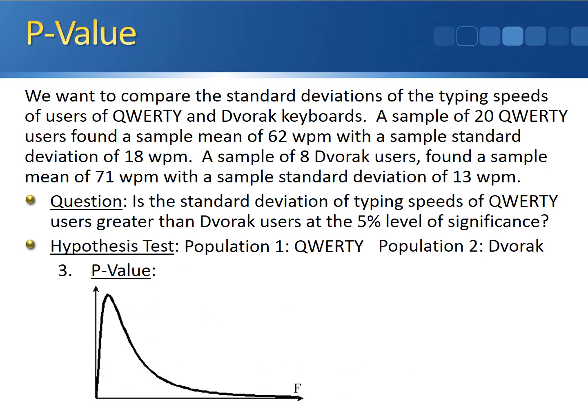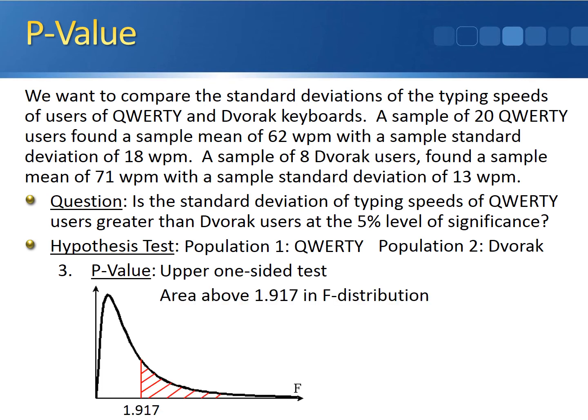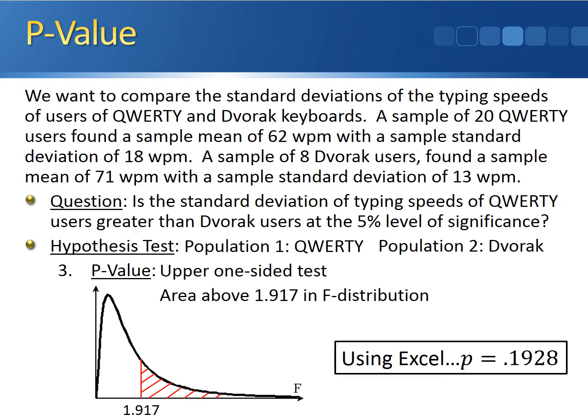To calculate the p-value, notice that the alternative hypothesis has a greater-than sign, telling us we're using an upper one-sided test. The p-value is the area above 1.917 in the F-distribution with 19 degrees of freedom in the numerator and 7 degrees of freedom in the denominator. Just like with the t-distribution and chi-square distribution, we can't use an F-table for an exact p-value — we need software. Using Excel, the p-value is 0.1928.